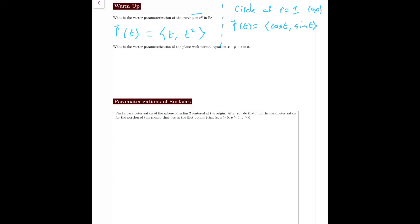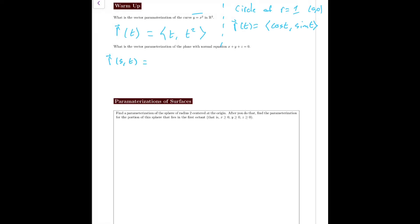Remember that the parameterization of a plane is given in terms of two parameters, and this is equal to a point on the plane (x₀, y₀, z₀) plus s times a vector that is parallel to the plane, plus t times another vector that is parallel to the plane. So how can we figure out what v₁ and v₂ are?